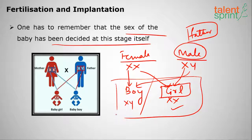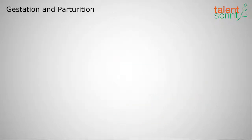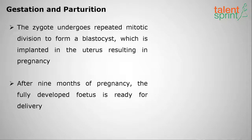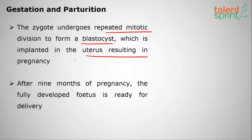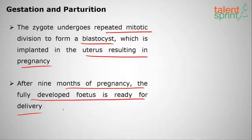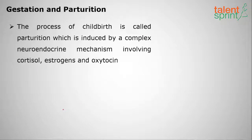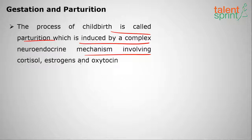Moving on to gestation and parturition: the zygote undergoes repeated mitotic division to form a blastocyst, which is implanted in the uterus, resulting in pregnancy. After nine months, the fully developed fetus is ready for delivery. The process of childbirth, called parturition, is induced by a complex neuroendocrine mechanism involving cortisol, estrogens, and oxytocin.